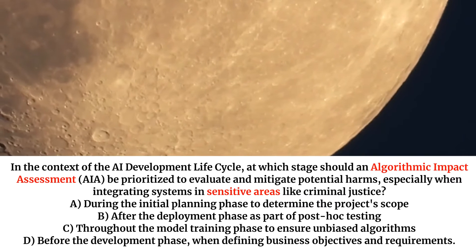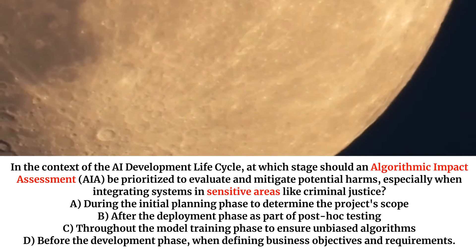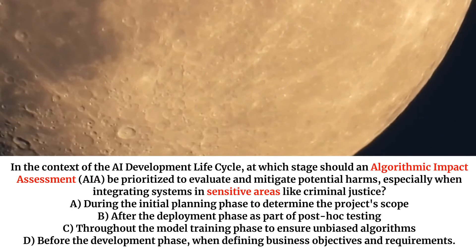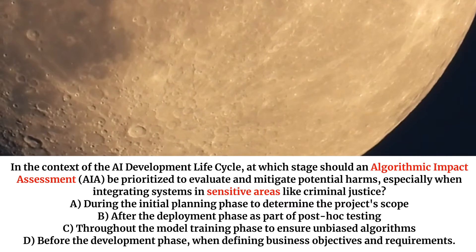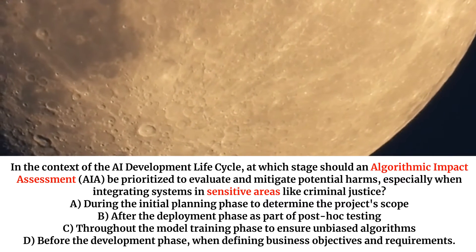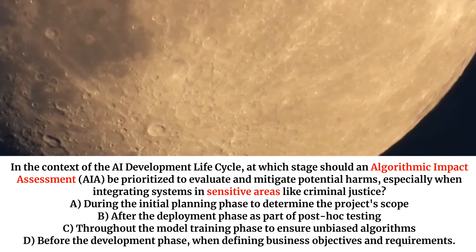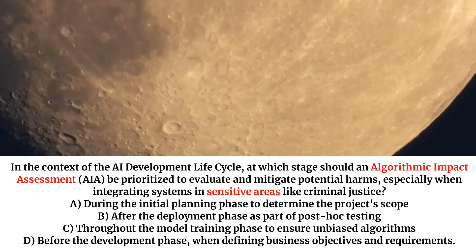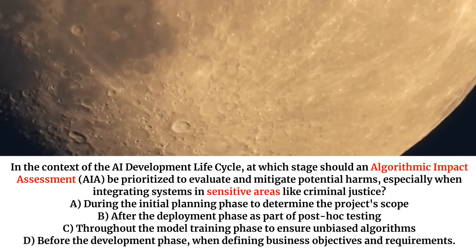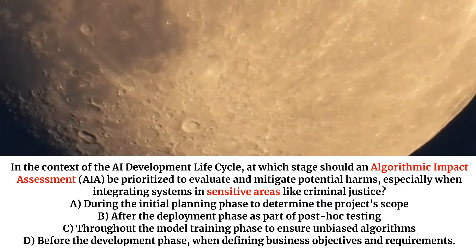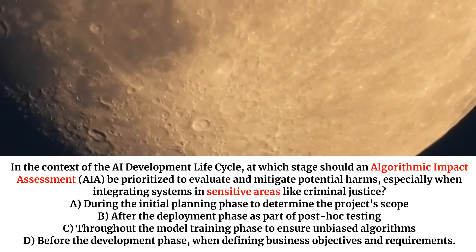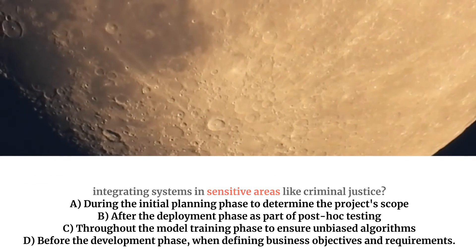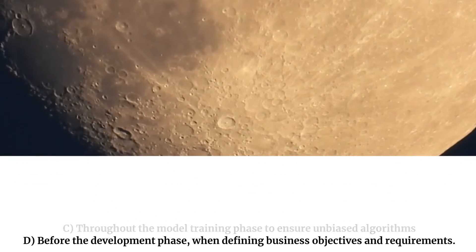In the context of the AI development lifecycle, at which stage should an algorithmic impact assessment (AIA) be prioritized to evaluate and mitigate potential harms, especially when integrating systems in sensitive areas like criminal justice? A. During the initial planning phase to determine the project scope. B. After the deployment phase as part of post-hoc testing. C. Throughout the model training phase to ensure unbiased algorithms. D. Before the development phase, when defining business objectives and requirements.